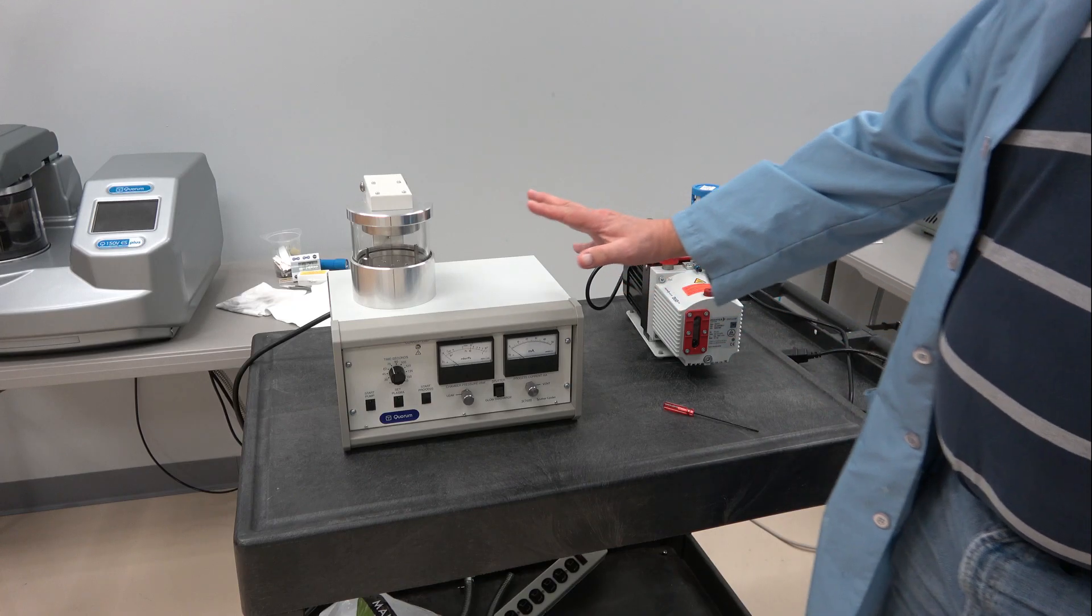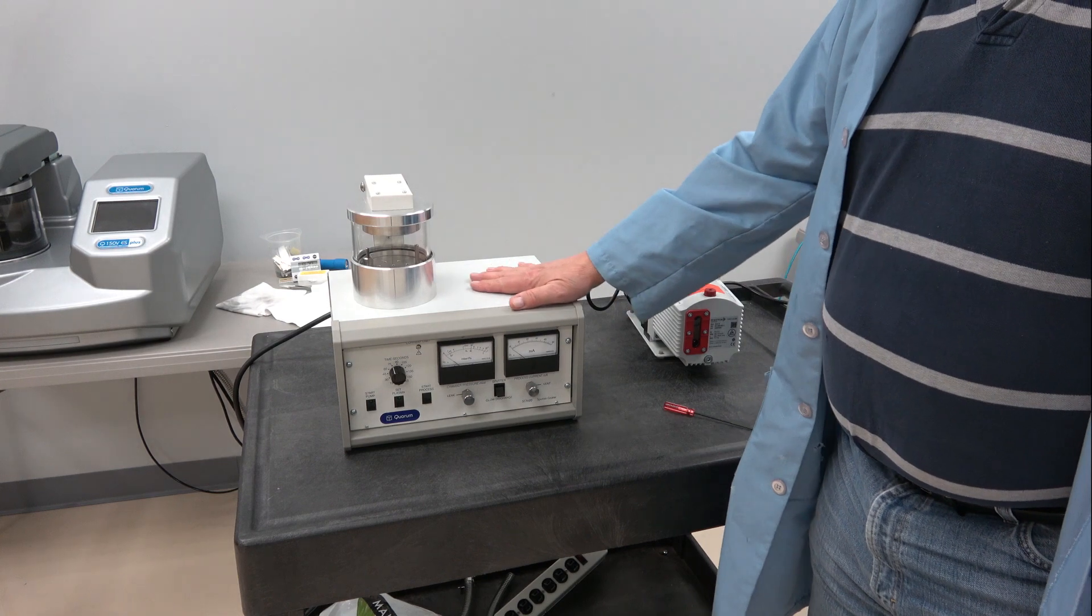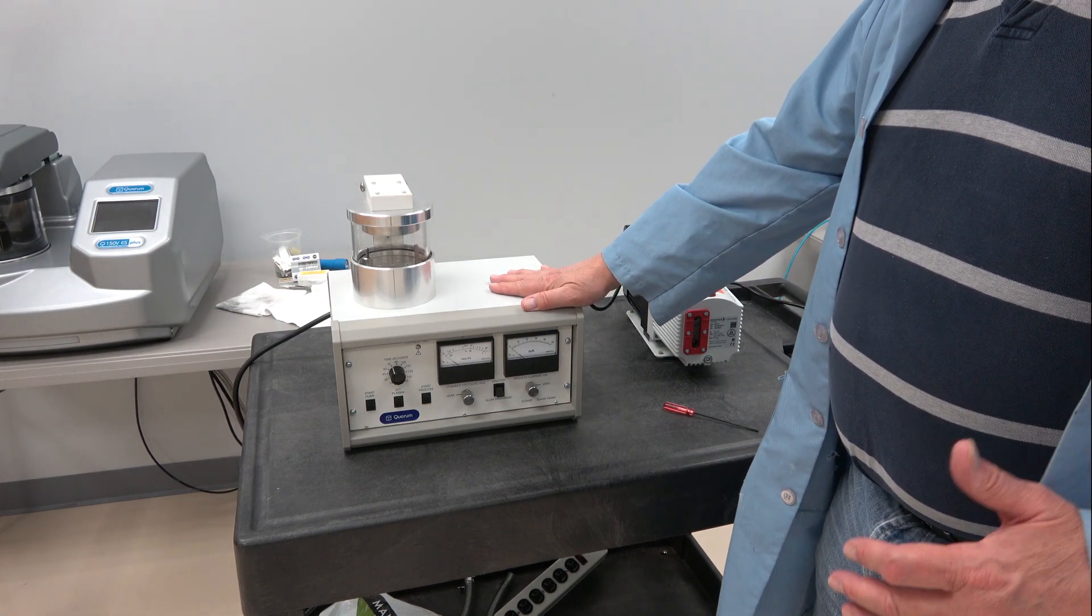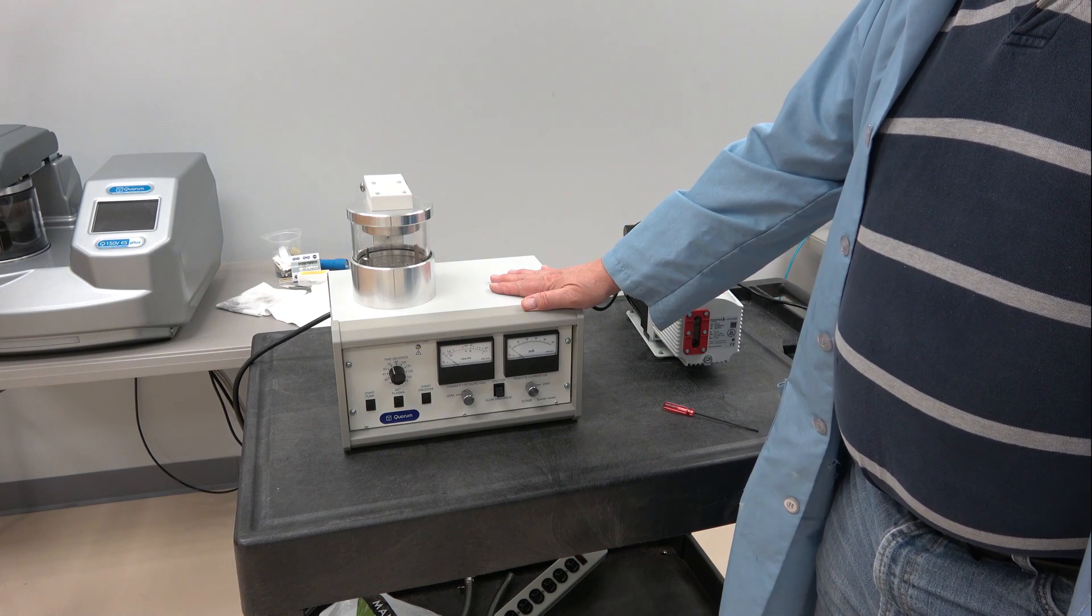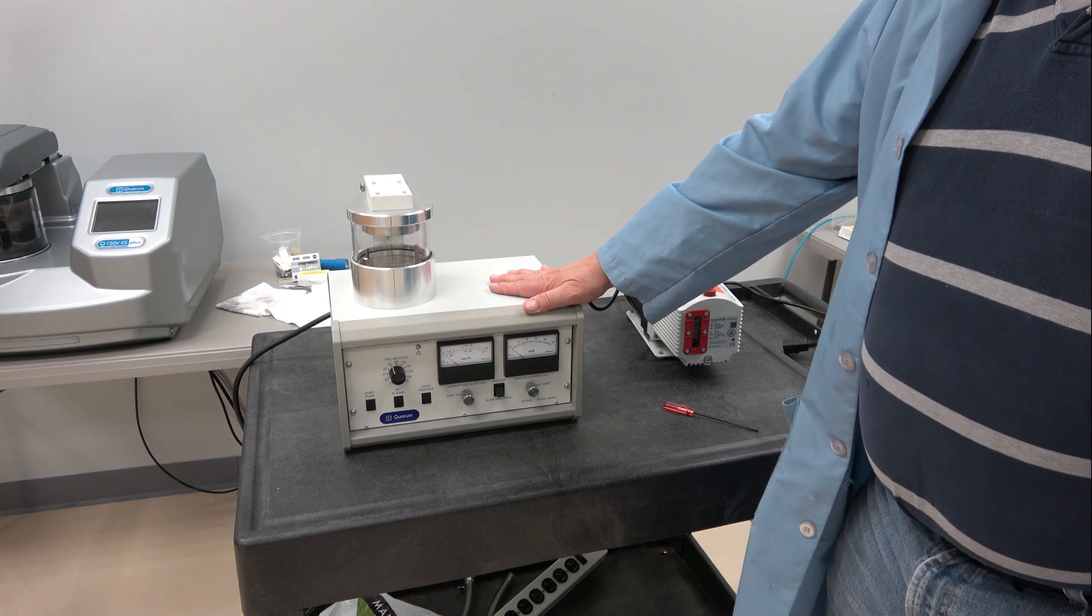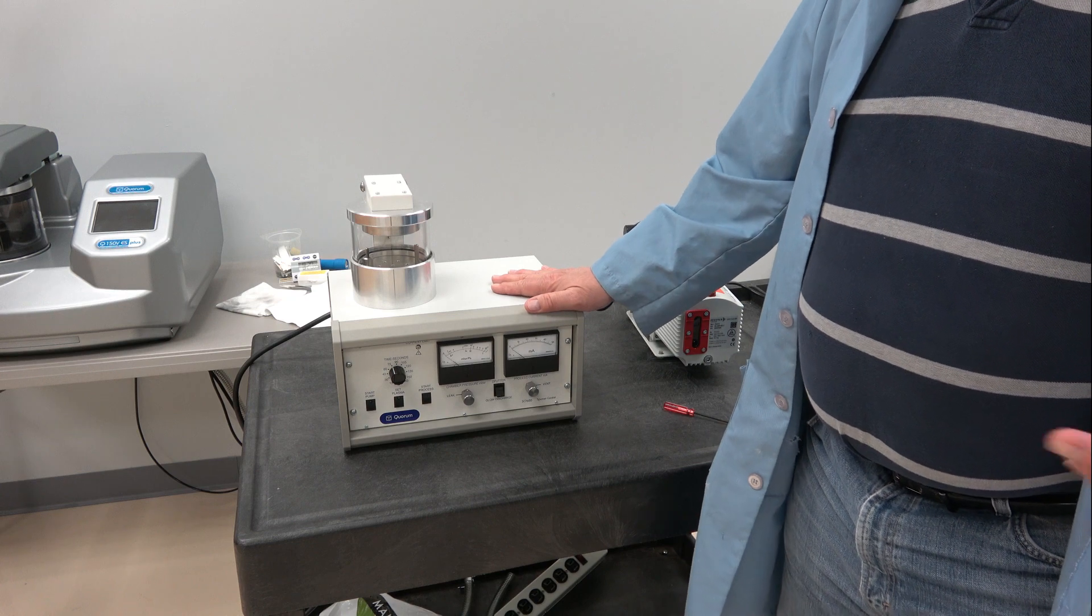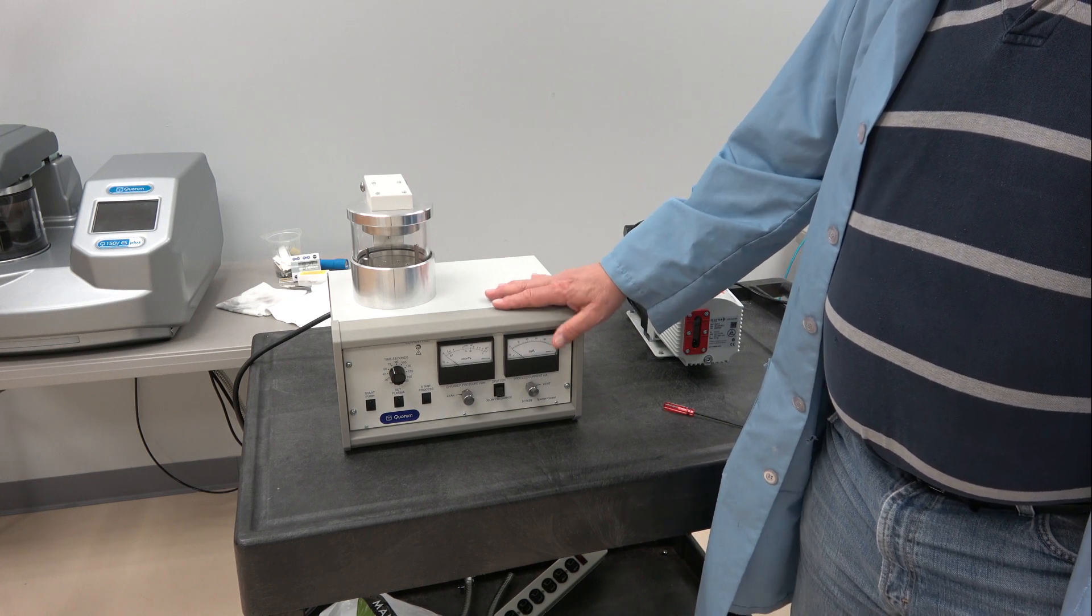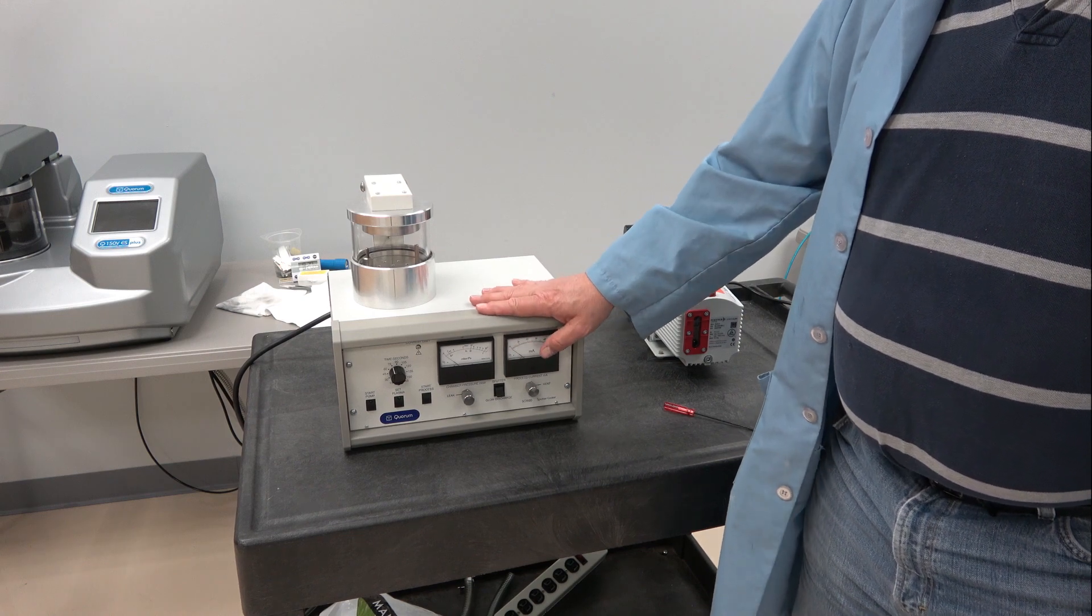So here's the SC7620. It is a somewhat primitive sputter coater, but for people just sputtering gold, gold palladium, or silver, this is all they really need. This is like 1990s technology.